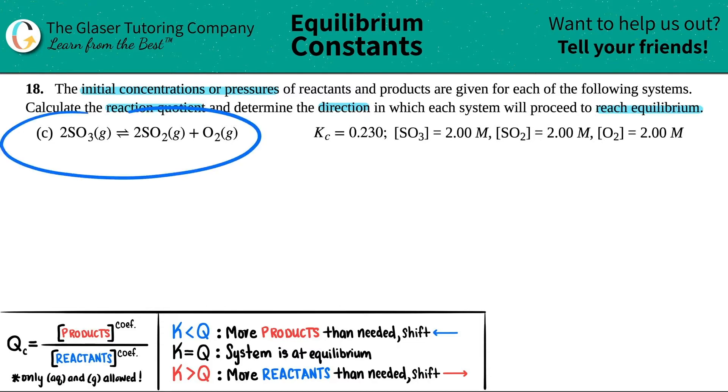Alright, so we have a number or letter C. We have an equation here, and I see that we have coefficients. I'm going to assume that this is balanced. So the first thing I'm going to do is write this equation out. We've got 2SO3 gas, this will come to equilibrium with 2SO2 gas plus O2 gas.